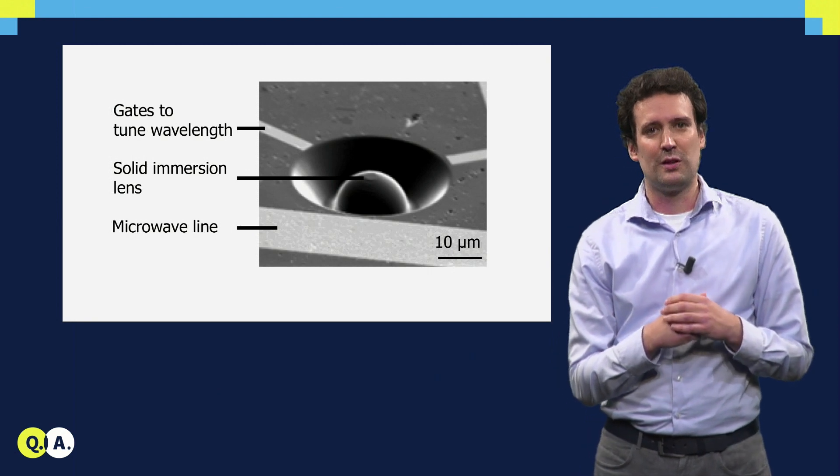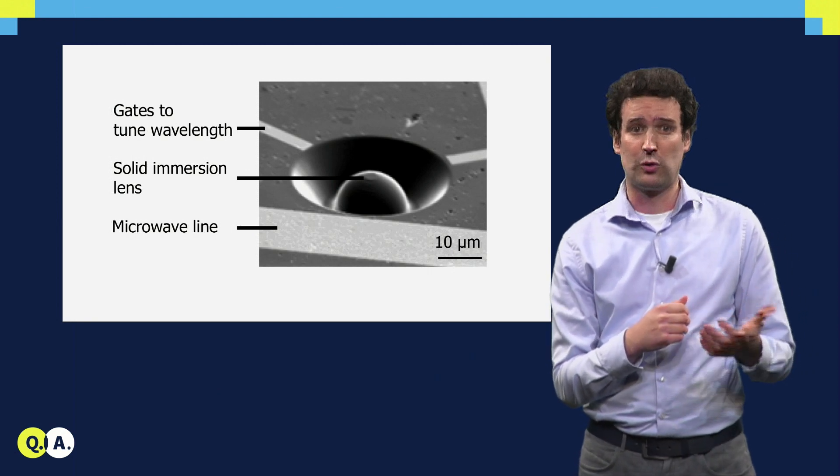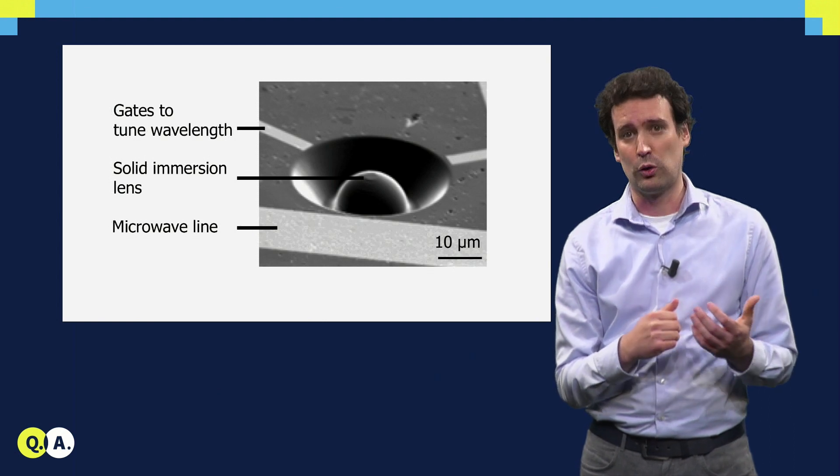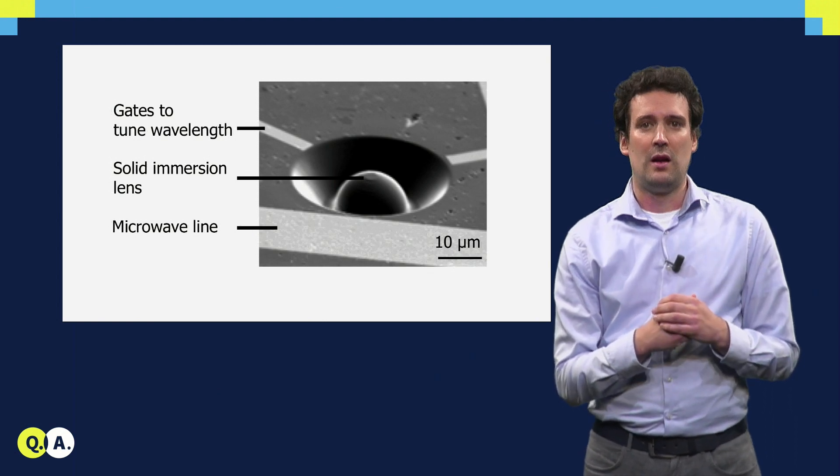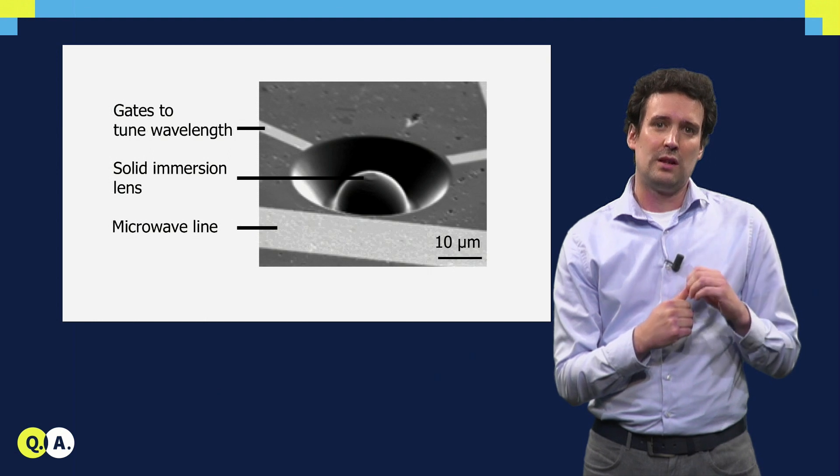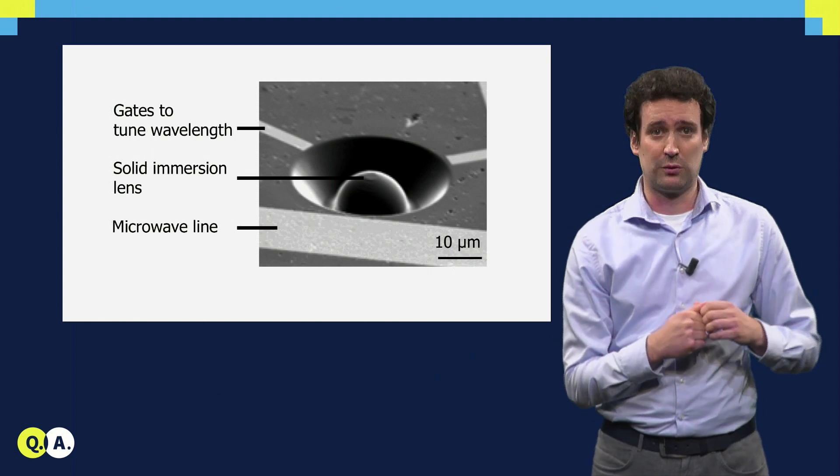The electrodes are used to apply electric fields that control the emission wavelengths of the NV center, the color that it emits. And the microwave line is used to apply microwave fields that control the spin state.